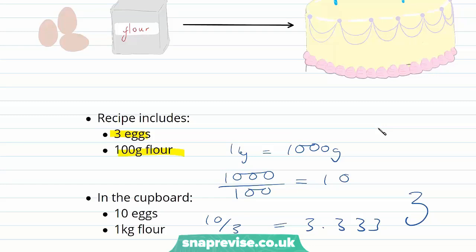We simply don't have enough eggs to make more than three cakes, even though we have more than enough flour. This is the idea with our limiting reagents. Although the flour is in excess, like our reagents in excess, it's the eggs — the limiting reagent — that dictates how much product, in this case the cake, can be made.